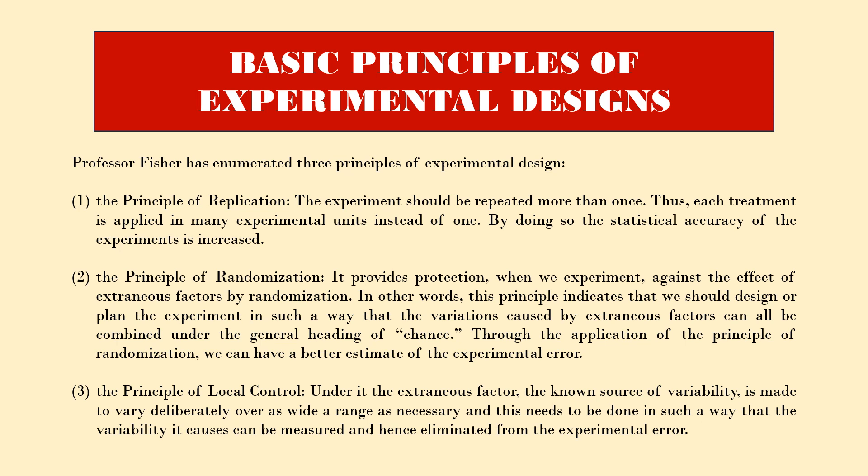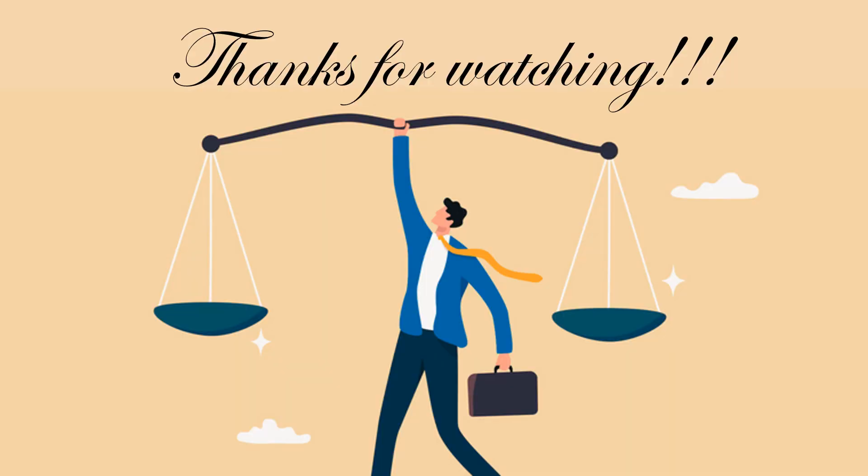Next is the principle of local control. It is actually known as the source of variability, and it involves a deliberate procedure applied over the experiment. This means we should plan the experiment in such a manner that we can perform a minimum two-way variance analysis. Three types of data will be collected, and among them experimental error will be one, which we can eliminate to get the particular data and conclusion. This is all for today — thanks for watching.